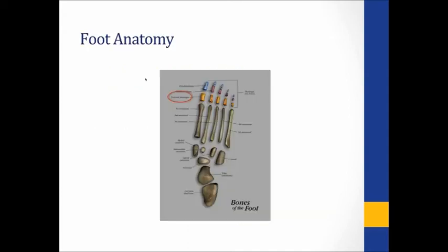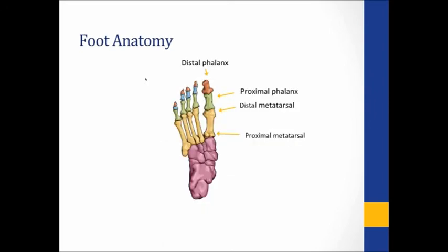Here's a good drawing showing the code selections for bunionectomy, with some anatomical markers to feel comfortable with. 28292 starts with the correction of the proximal phalanx — the first section of the toe, circled in red on your screen. You're going to see a lot of proximals and distals in documentation — the devil's in the details on this one. The metatarsals are your foot bones; the proximal phalanx is the first toe bone shown in green, and then the very tip is the distal phalanx. Be careful not to confuse proximal metatarsal with proximal phalanx — where you're working is an important piece.